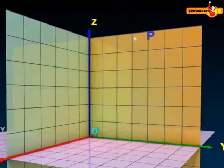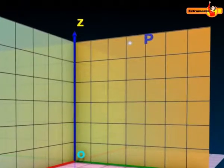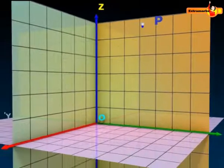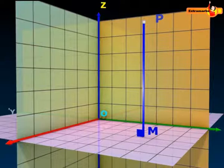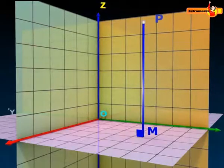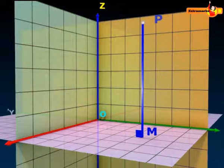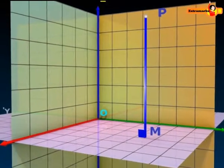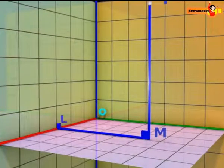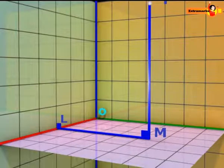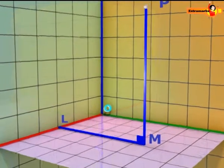Let's take a point P in space. Draw a perpendicular PM on the XY plane with M as the foot of the perpendicular. Then from the point M, draw a perpendicular ML to the x-axis meeting it at L.